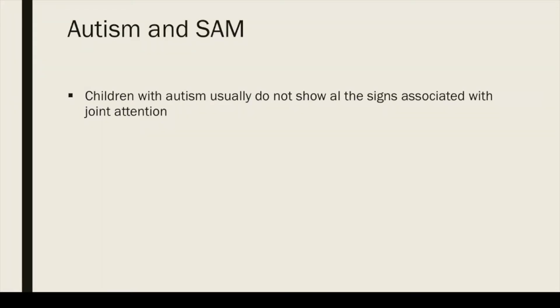With respect to SAM, children with autism usually do not show all the signs associated with joint attention. They do not show gaze monitoring, nor do they try to direct the visual attention of others by means of gestures. It's not that they can't point at all — they can point to request objects, for instance — but unlike typical children, they don't use pointing just for the sake of influencing someone else's attention or to establish shared interest.